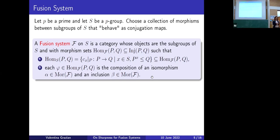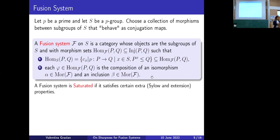Moreover, when we talk about fusion categories of a group, I wanted S to be a Sylow p-subgroup because in that scenario we have very nice properties, and we want to keep these in the general setting. So we add some axioms. When we have these extra axioms, we talk about a saturated fusion system. From now on, whenever I say fusion system, I really mean saturated fusion system — and these are the objects people are interested in.